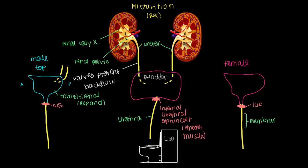After the internal urethral sphincter, there's a part called the membranous urethra — named because the urethra passes through a membrane or sheet that circles it. Below the internal urethral sphincter, this membrane circling our urethra is the external urethral sphincter. Because it's external and something we control, it's made up of skeletal muscle — and this is what we learn to control through potty training.